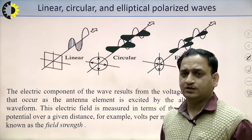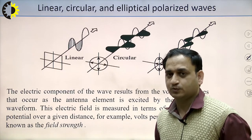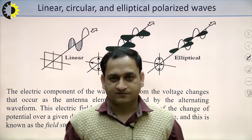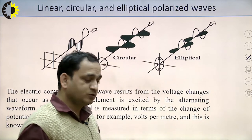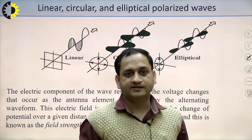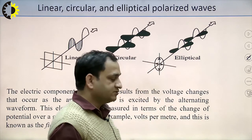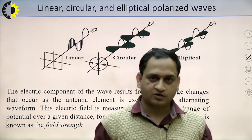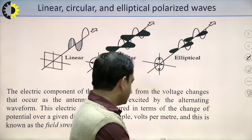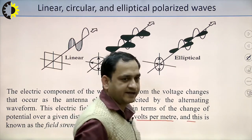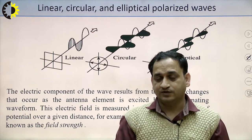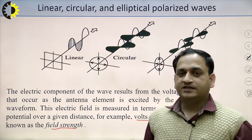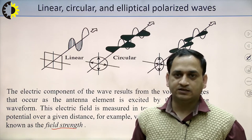The propagation of a wave can be of different polarizations, based on the electric and magnetic components. The electric component is a wave result that propagates from voltage changes that occur as the antenna is excited by alternating waveforms. The electric field is measured in terms of the change in potential over a given distance — the voltage parameter V upon L, which is called the field strength. Polarization can be of three types: linear, circular, or elliptical.